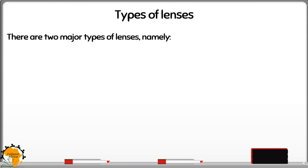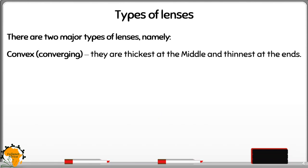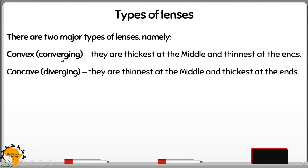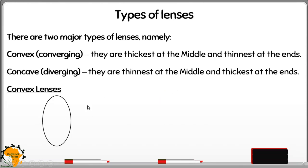Let us look at the two major types of lenses. First, we have the convex, or what we call the converging lens. As it is called converging, its work is to bring together rays. It is thickest at the middle while the sides are thinner. Second, we have the concave or diverging lens, which spreads the rays that are incident to it. It is thinnest at the middle and thickest towards the edges.